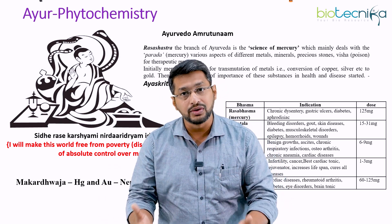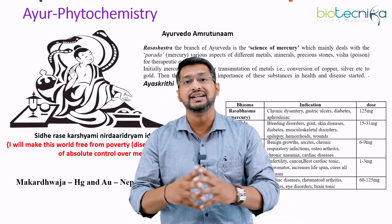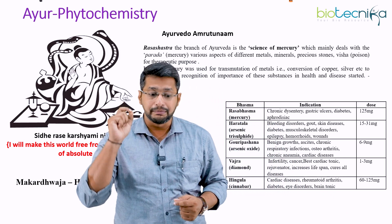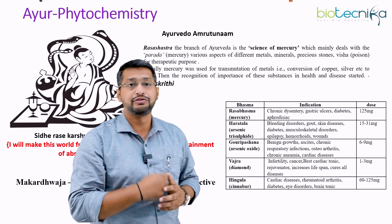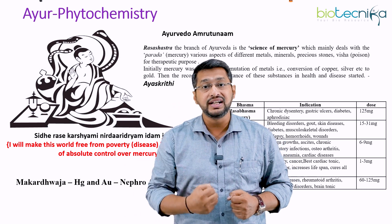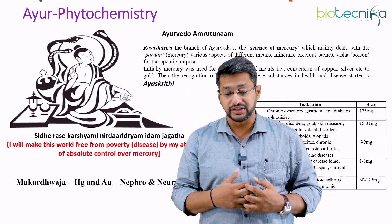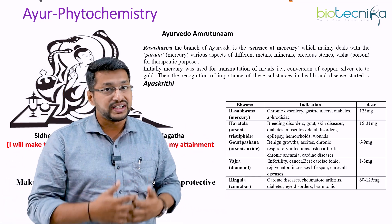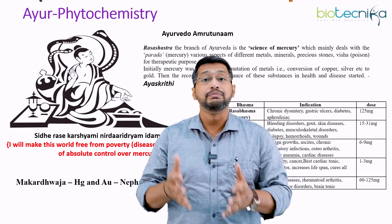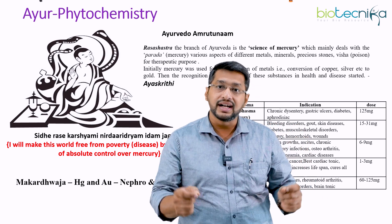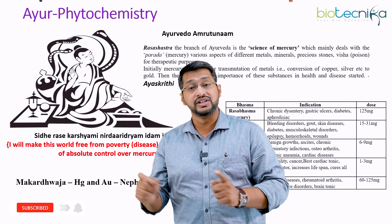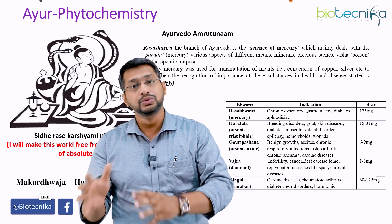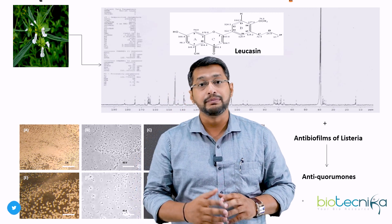Before we look into the mode of action, we need a very strong understanding of Ayurveda — only then can you amalgamate phytochemistry with Ayurveda. Mercury, copper, and gold are believed to have neuro-protective and nephro-protective activity. A lot of information is available, but on the mode of action there is absolutely no data. Hence, with phytochemistry and medicinal chemistry, people are trying to understand the classics of Ayurveda in modern terminology to decipher the mechanism of action.